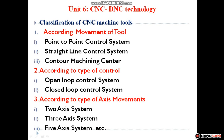CNC machine tools are classified in three categories. First, according to movement of tool, which is classified into three types: point to point control system, straight line control system, and contour machining center. Second, according to type of control system, classified into open loop and closed loop control system. Third, according to axis movement, classified into two axis, three axis, and five axis systems. Even eight axis systems are available in industries.